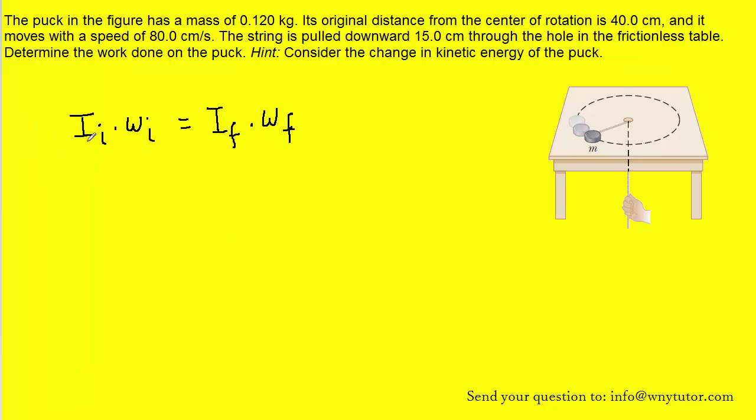Now in this equation, I represents the moment of inertia of the object, which in this case is the puck. And the omegas, which look like w's, is the angular velocity of the puck.